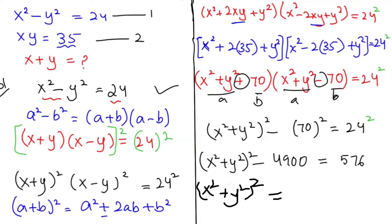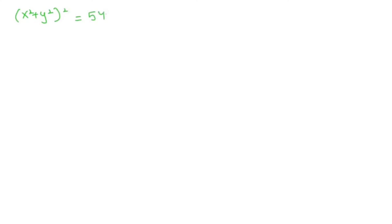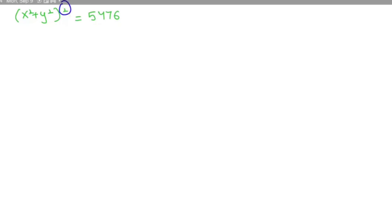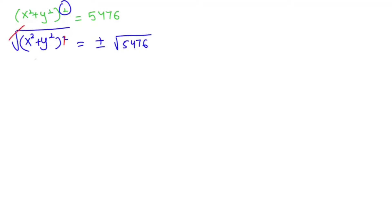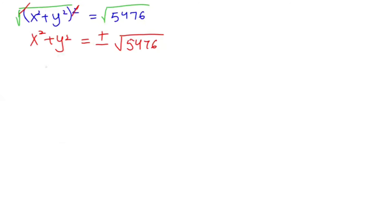Now here (x² plus y²)² is equal to 5476. I want to remove this square, so I'm going to take the square root of both sides. (x² plus y²)² under the root equals plus or minus root of 5476. The square and root cancel, so the remaining expression is x² plus y² is equal to plus or minus 74.